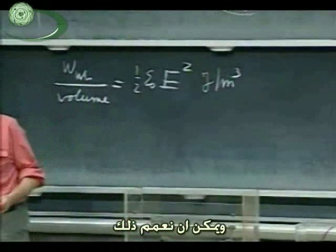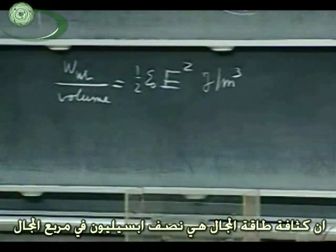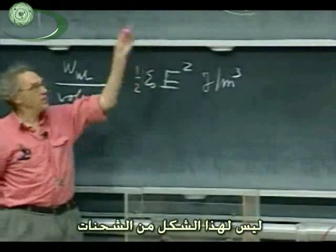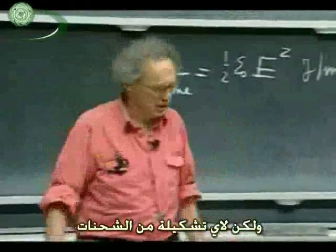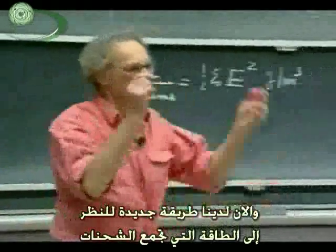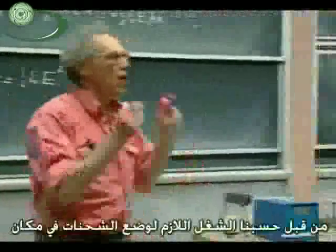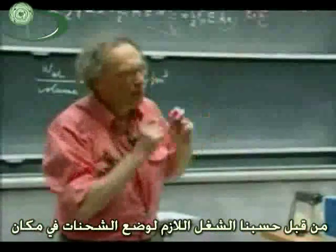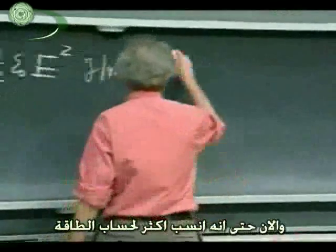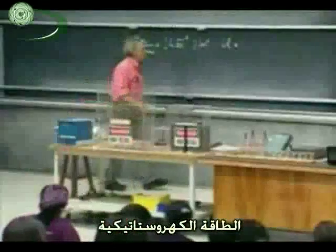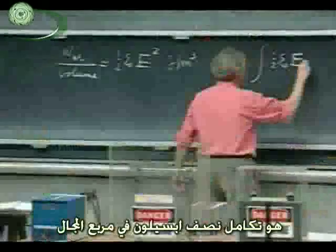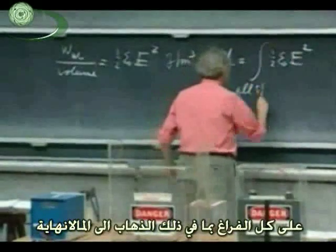It can be shown that in general the electric field energy density is one half epsilon zero E squared — not only for this particular charge configuration, but for any charge configuration. So now we have a new way of looking at the energy that it takes to assemble charges. Earlier we calculated the work to put the charges in place. Now, if it is more convenient, we could calculate the electrostatic potential energy as the integral of one half epsilon zero E squared over all space.